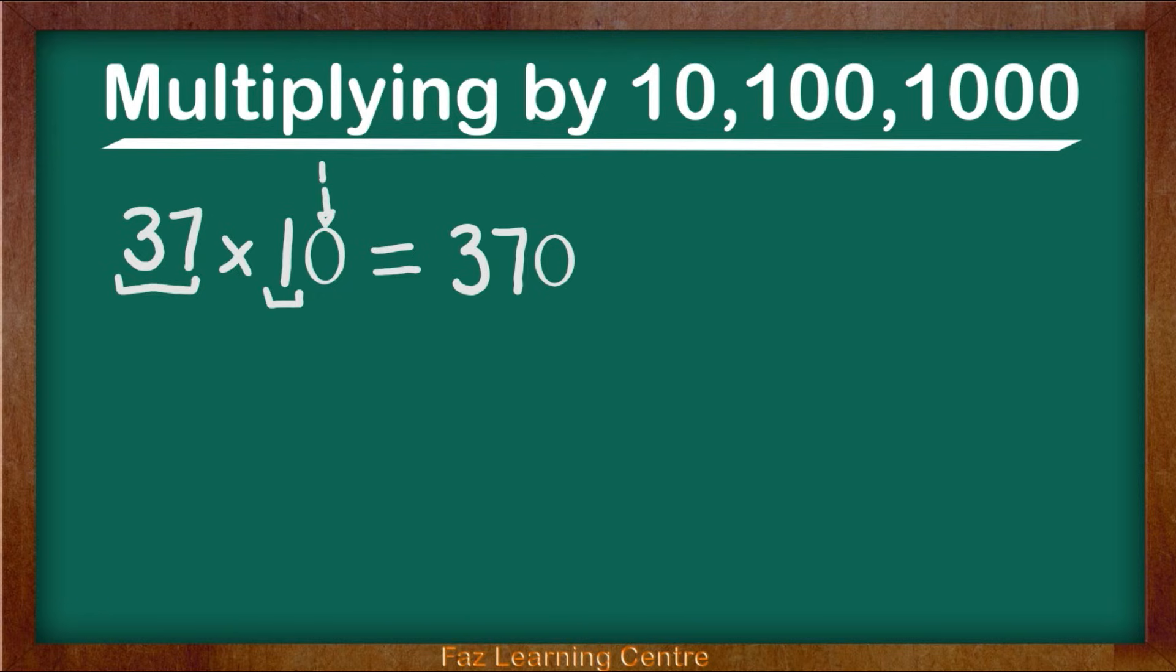The next question is going to be very similar. 37 times by 100. Again we are going to use the same method. 37 times by 1 which gives us 37.